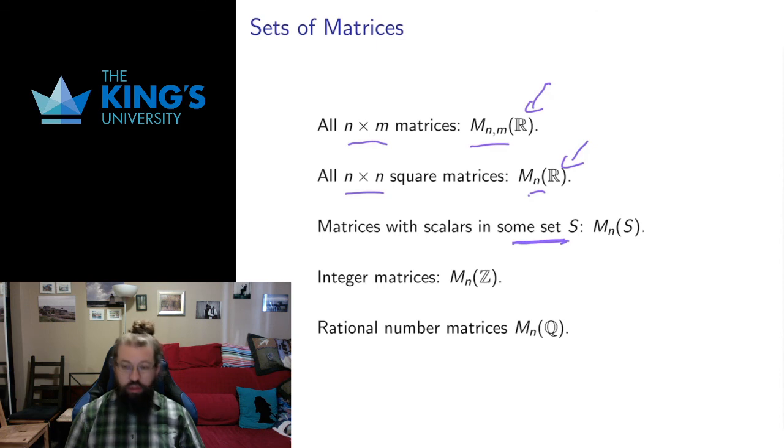The entries can come from whatever number set you wish. So here's some square matrices with entries from some number set S. I could have square matrices with entries that are integers, or square matrices with entries that are rational numbers. I can put in those brackets whatever number set I want to work with, which tells me where the entries, the components of the matrix, come from.